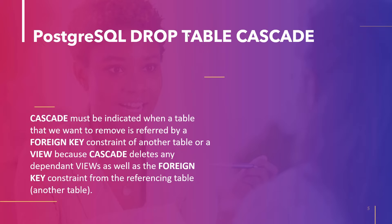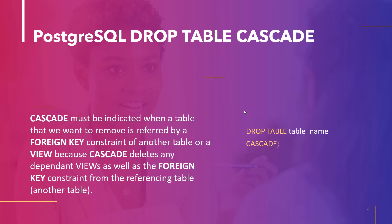The next topic is PostgreSQL Drop Table CASCADE. When the table you want to remove is referenced by a foreign key constraint of another table or a view, CASCADE must be specified. CASCADE removes any dependent views entirely and removes the foreign key constraint from the referencing table. The syntax is: DROP TABLE table_name CASCADE. If we don't want to force dropping, we can skip CASCADE or specify RESTRICT, which is the default and refuses to drop the table if any object depends on it.